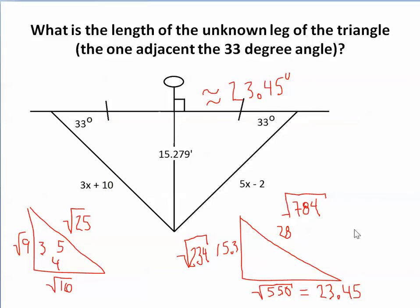Our answer makes sense. Going back to the original question — what is the length of the unknown leg adjacent to the 33 degrees — the answer is approximately 23.45 units, correct to two decimal places.